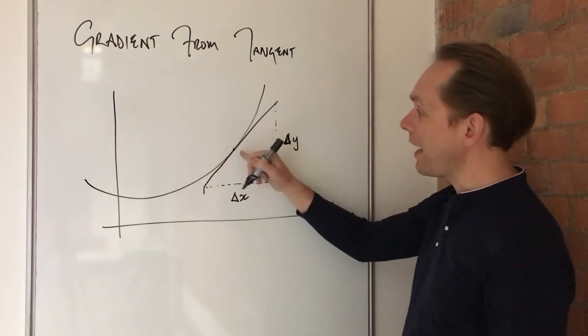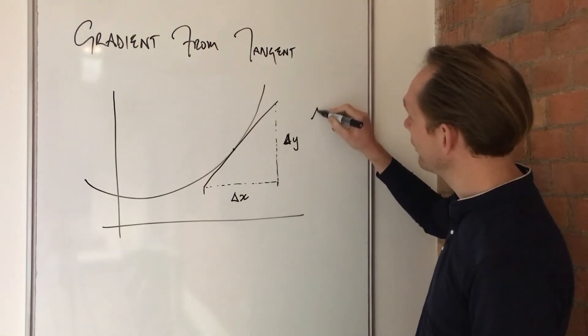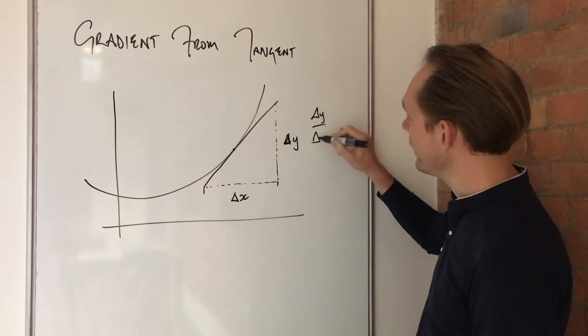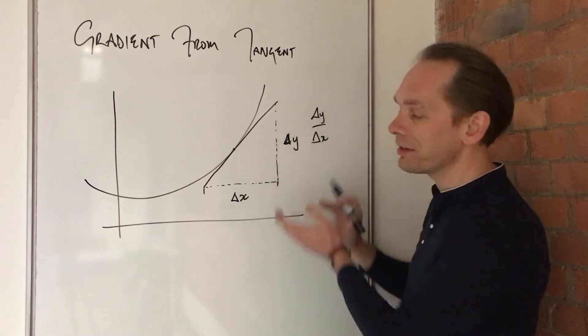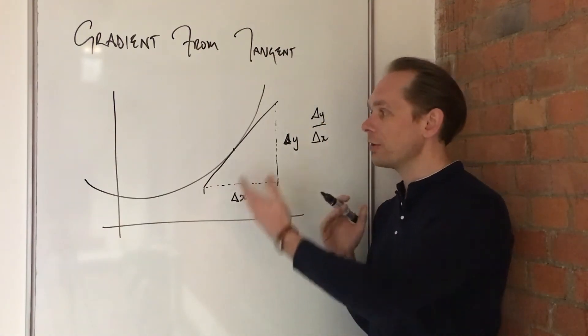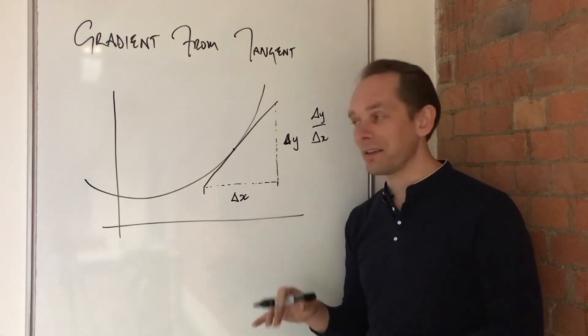Now, the gradient at this point is delta y over delta x, change in height over change in width. So if you can put numbers to that, you can perform that calculation, you find the gradient of the curve at that point, that's it.